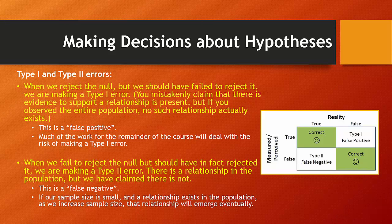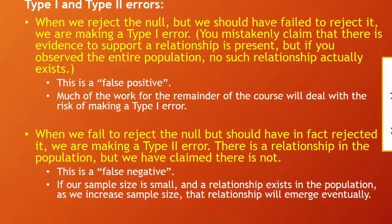When we test hypotheses and make claims about the null hypothesis, we risk making either a type 1 or a type 2 error. When we reject the null hypothesis but should have failed to reject it, we're making a type 1 error — a false positive claim. We're mistakenly claiming there's evidence to support a relationship, but if you observed the entire population, that relationship is not actually there; it's an artifact of our sample. Much of the remainder of the course will be designed with dealing with type 1 errors. Type 2 errors are when we fail to reject the null — claiming there's no relationship — but we should have rejected it and claimed there is a relationship. This is a false negative.